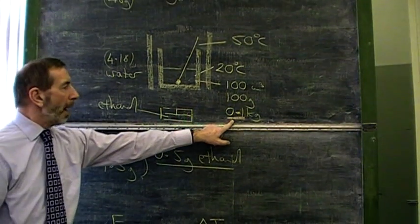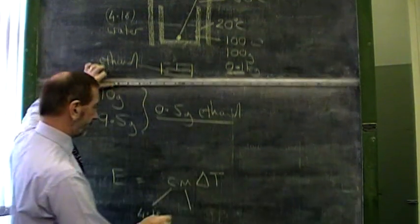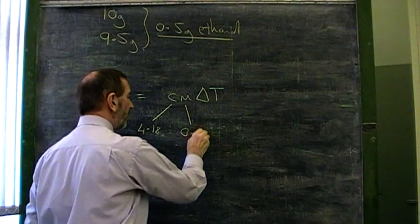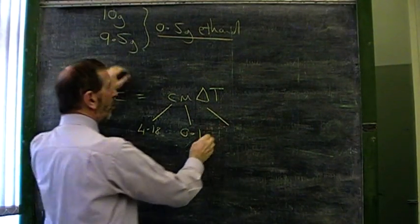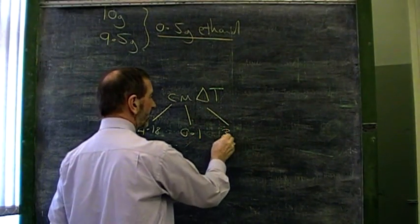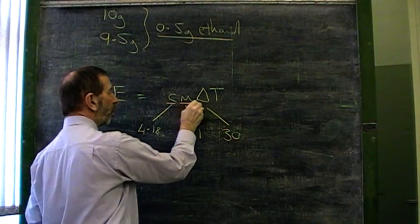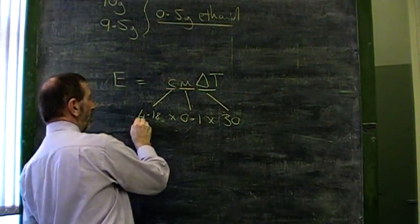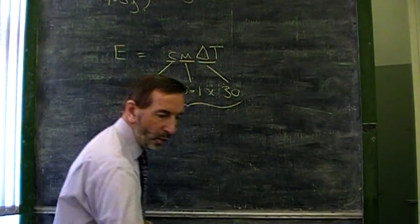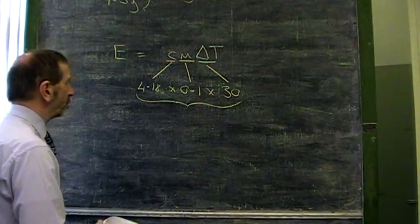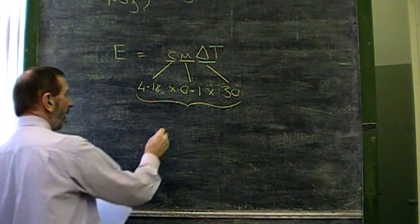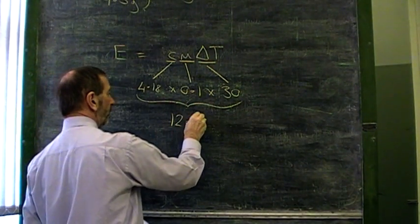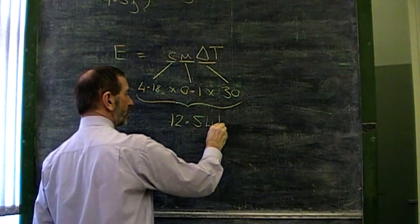100 cubic centimeters, 100 grams, 0.1 of a kilogram. And finally, this is the temperature rise of the water. The water temperature went up by 30 degrees. Water, water, water. If we do this simple sum, we can see how much energy was produced in burning this small quantity of ethanol, and it comes to 12.54 kilojoules.